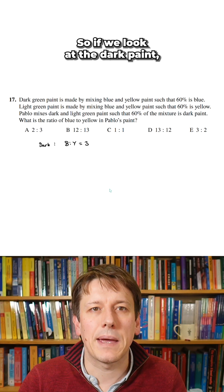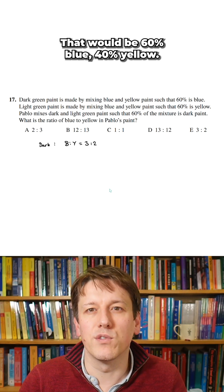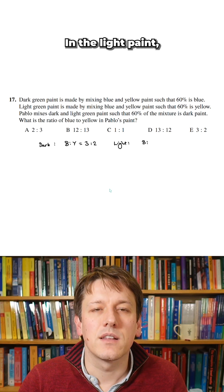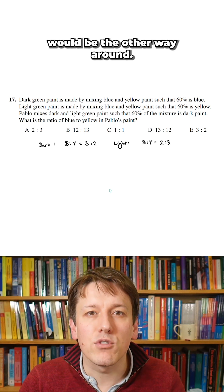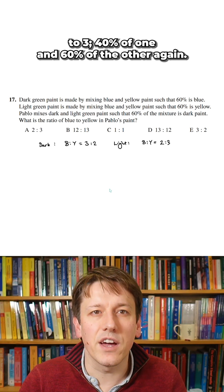If we look at the dark paint, the ratio of blue to yellow would be 3 to 2, that would be 60% blue, 40% yellow. In the light paint, the ratio of blue to yellow would be the other way around, it would be 2 to 3, 40% of one and 60% of the other again.